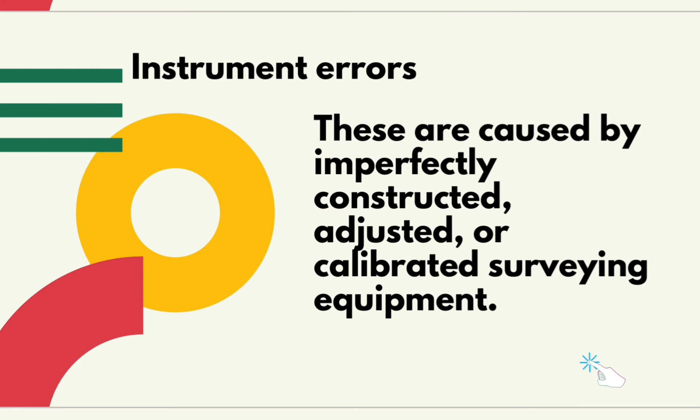Instrument errors are caused by imperfectly constructed, adjusted, or calibrated surveying equipment. Most of these errors can be reduced by properly leveling the instrument, balancing backside or foresight shots, reducing measurement distances, and observing direct and reverse positions or double centering. Instrument errors can be further minimized by periodically calibrating surveying instruments, prisms, rods, and tribe rocks.